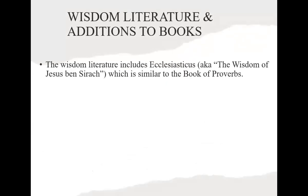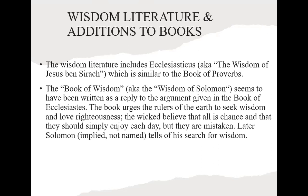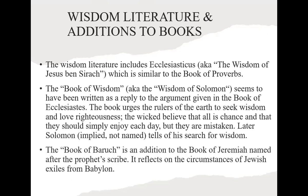Wisdom literature refers to books like Proverbs, Ecclesiastes, and Psalms — the poetical books. Ecclesiasticus is similar to the book of Proverbs, and the Book of Wisdom, sometimes called the Wisdom of Solomon, is similar to the book of Ecclesiastes. The book of Baruch is an addition to the book of Jeremiah — you'll know that Jeremiah had a scribe named Baruch, and this book purports to be written by him.